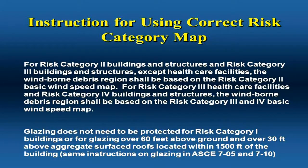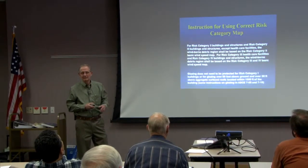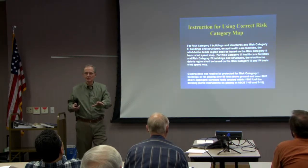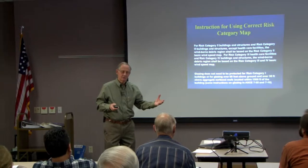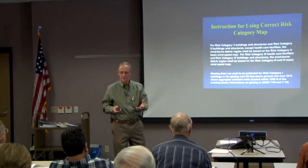You might think that a risk category 3 building would use that map when defining wind-borne debris, but it isn't quite that simple. For risk category 2 and most risk category 3 buildings and structures — except healthcare facilities — the risk category 2 basic wind speed is used. For risk category 3 healthcare facilities and risk category 4, the 3 and 4 basic wind speed map is used. Just remember to read those definitions so you're using the right map.